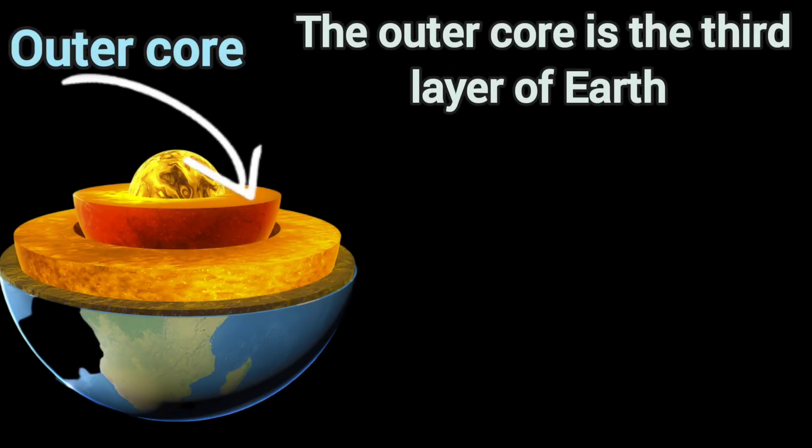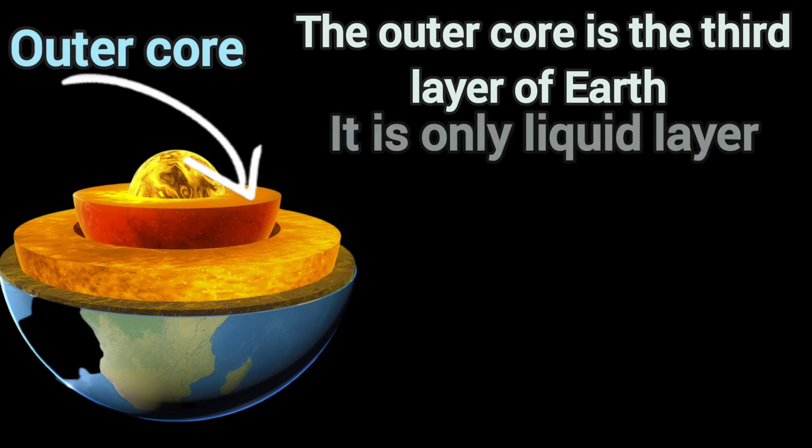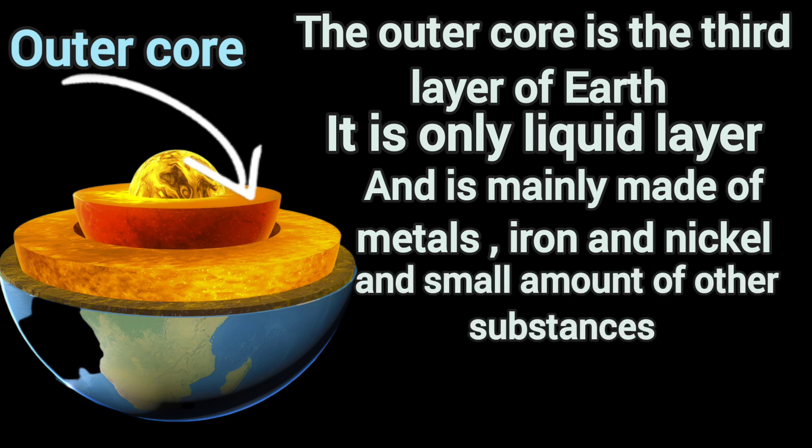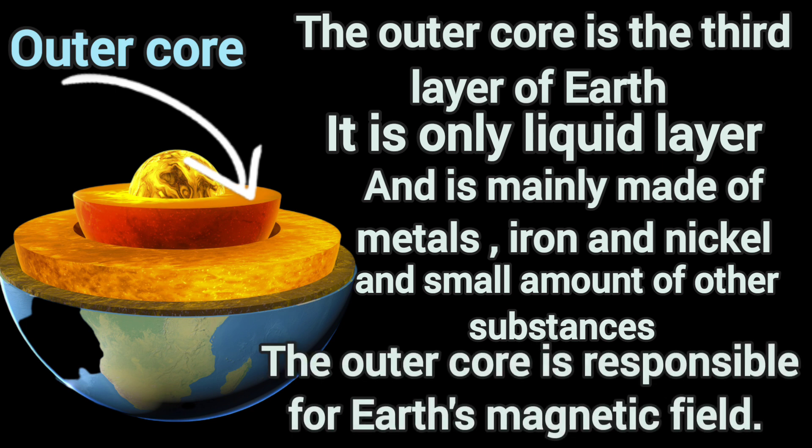Outer core. The outer core is the third layer of earth. It is the only liquid layer and is mainly made of metals, iron and nickel, and small amounts of other substances. The outer core is responsible for earth's magnetic field. It spins rapidly.